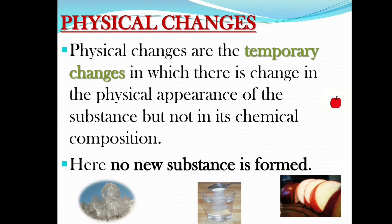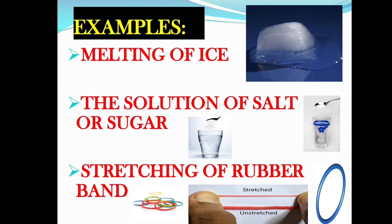Physical changes are temporary changes in which there is a change in the physical appearance of the substance but not in its chemical composition. No new substance is formed. Examples of physical changes: melting of ice, dissolving salt or sugar in water, and stretching of a rubber band.